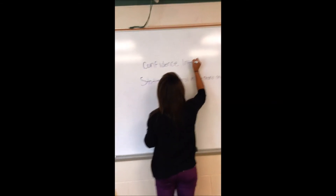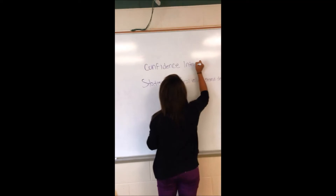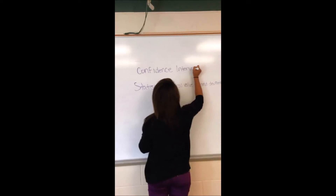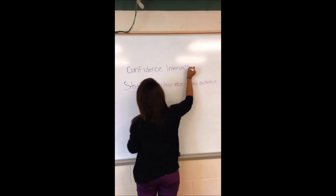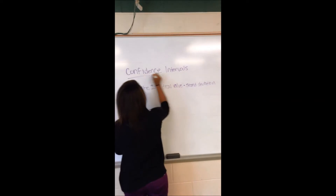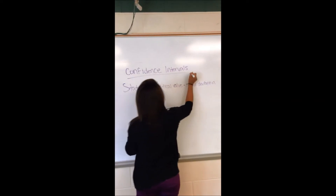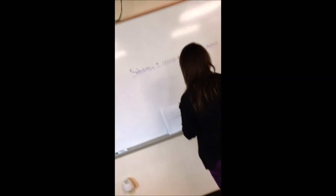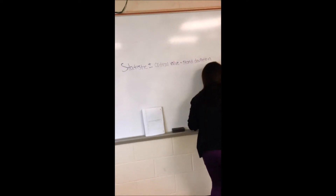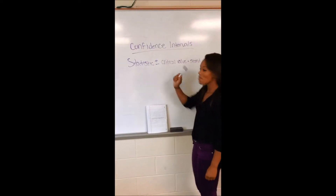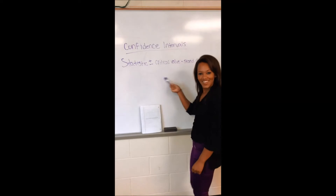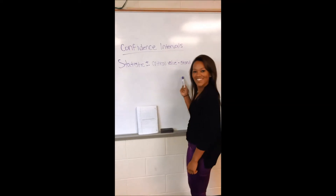I'm talking confidence intervals, probabilities. Stat plus CV multiplied by SD. To find your CV, you go to Table B — degrees of freedom and confidence — now you got your T. Don't forget you gotta subtract the CV from the stat — interval is now done!